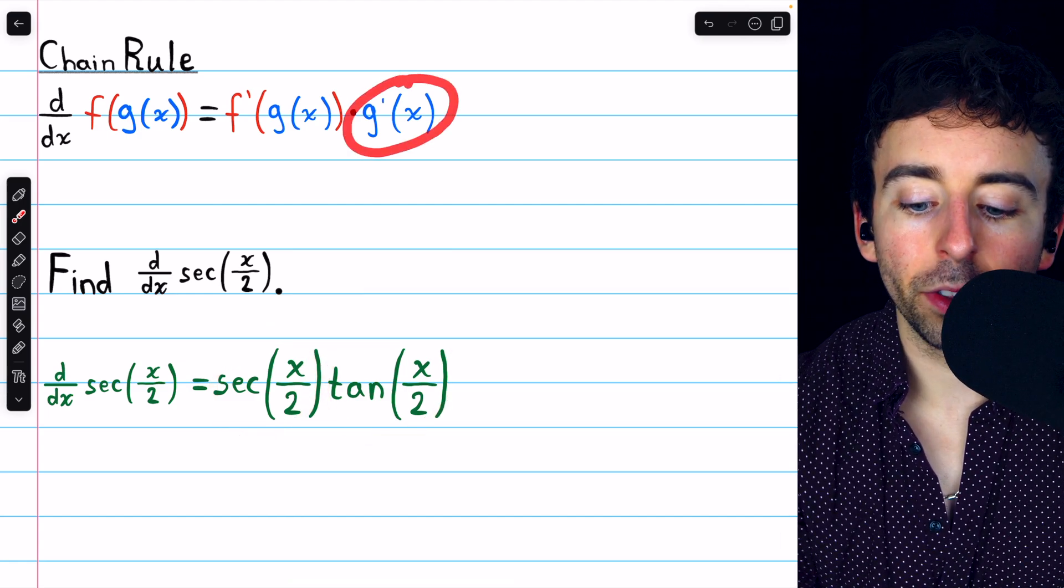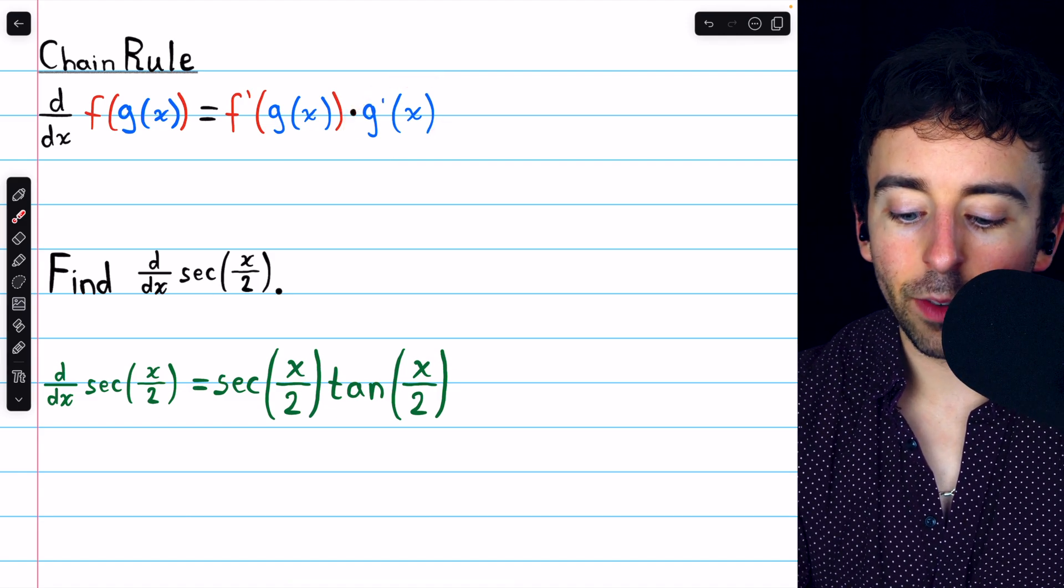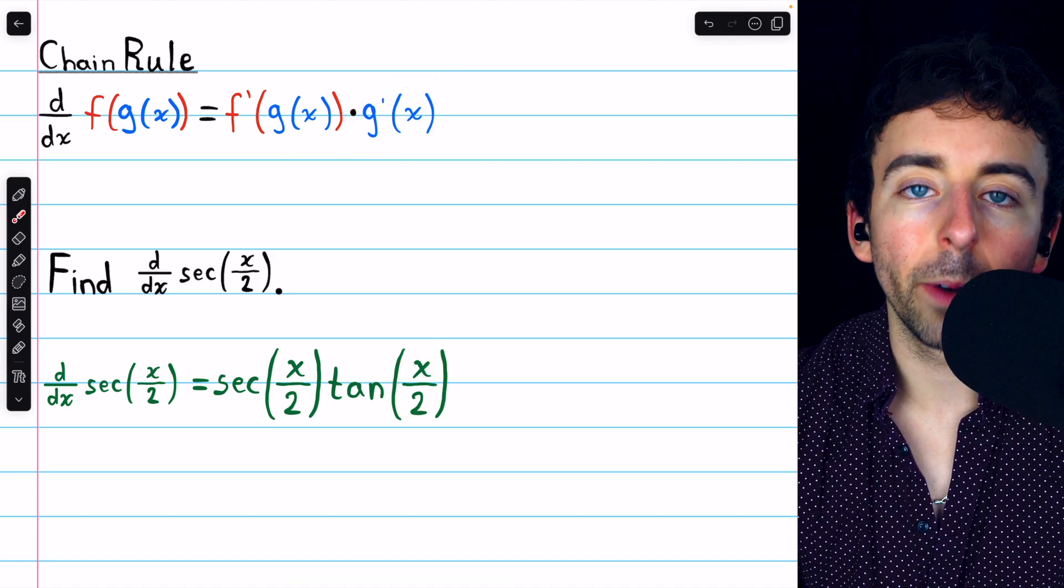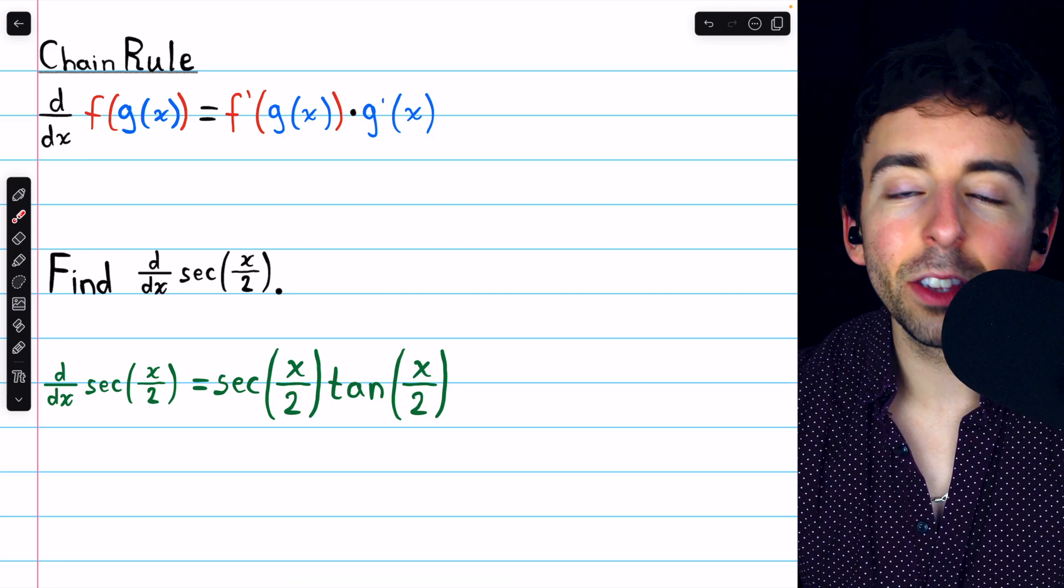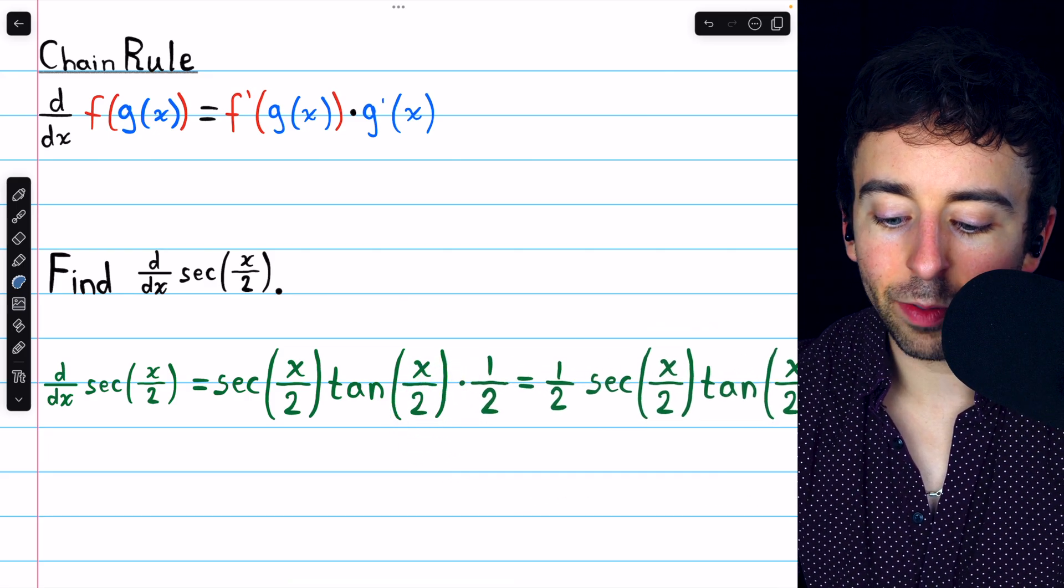Then the last thing is to multiply by g prime, the derivative of the inside function. The inside function is x over 2, or one half x, and the derivative of one half x is just one half.